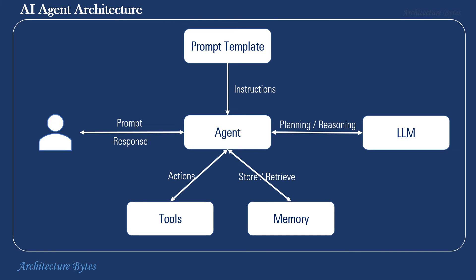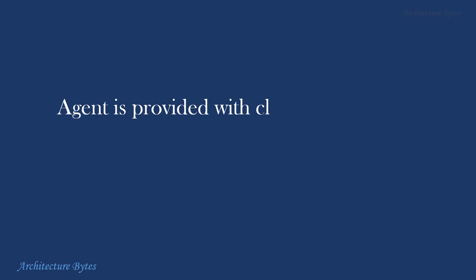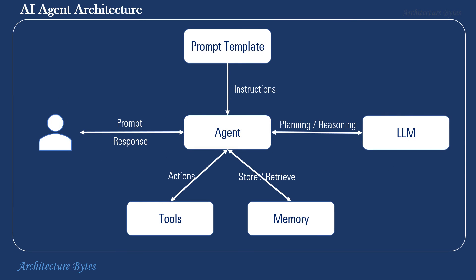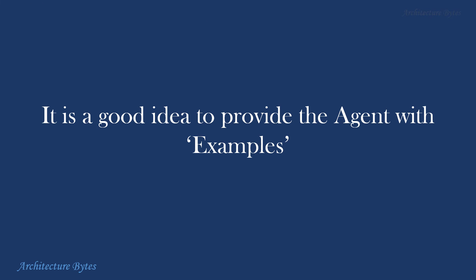Note that in this process, the LLM is not really aware that an orchestrator is using it as part of a larger framework — it simply works with the instructions and prompts passed to it. Therefore, it is very important that the agent is provided with clear instructions via the prompt template and the list of available tools, their purpose, and their interfaces. The agent will use all of this to orchestrate the flow. It is also a good idea to provide the agent with examples — these are typical use cases for the agent to refer to, and these examples could also serve as few-shot learning for LLMs.